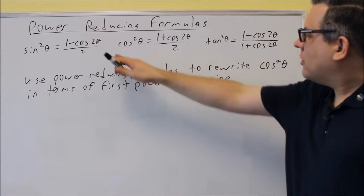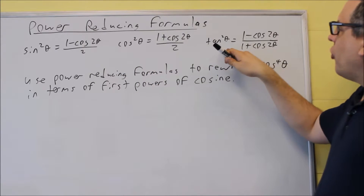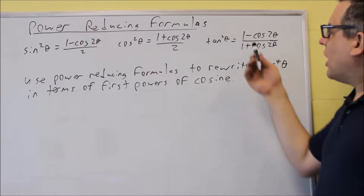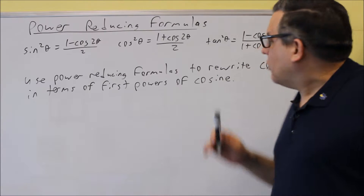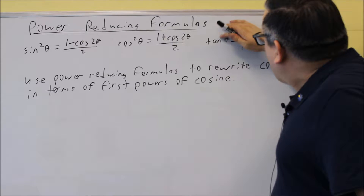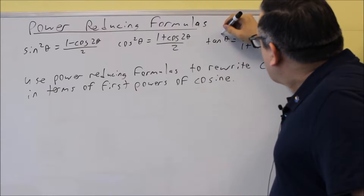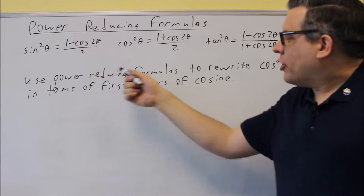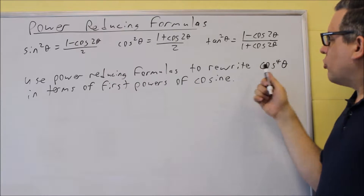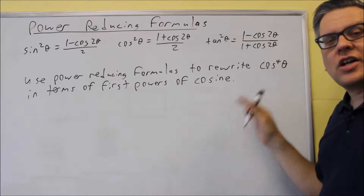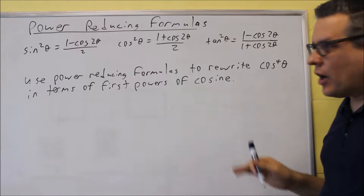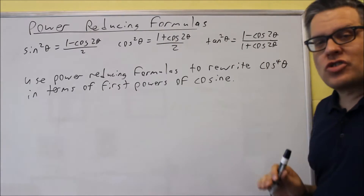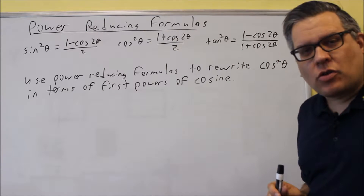Here are the three different formulas: sine squared, cosine squared, and tangent squared — we have the formulas written for all of those. Now we're going to use power reducing formulas to rewrite cosine to the fourth power.